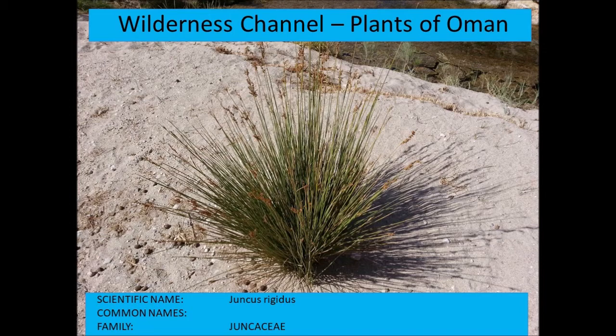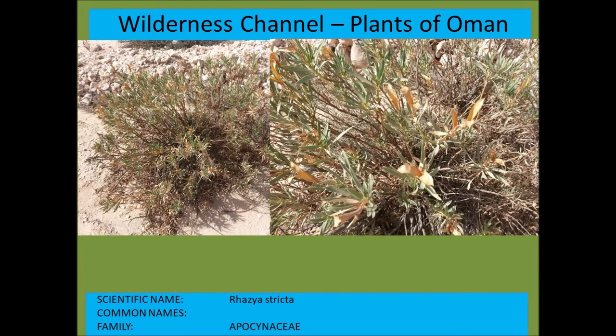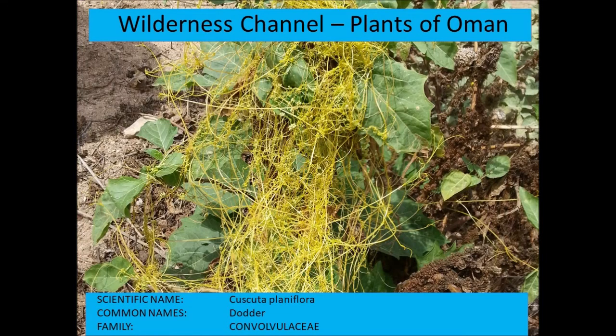Rhazya stricta as mentioned previously. This is a Cassytha plantiflora — a dodder species — one of the parasitic plants that grows its haustoria into the stems of other plants and lives off them, from the morning glory family.